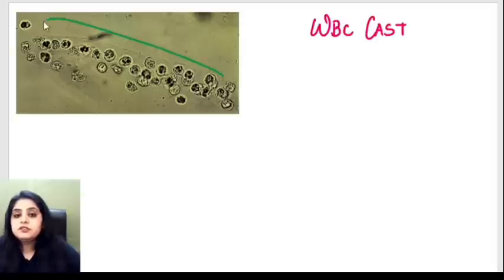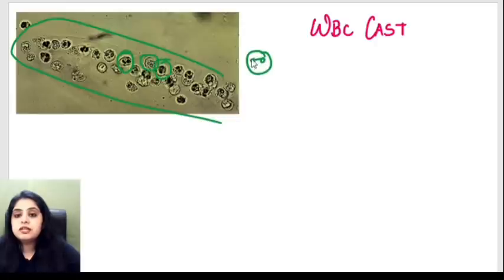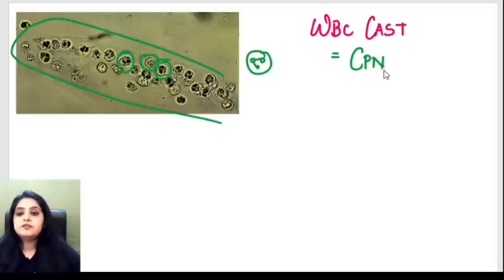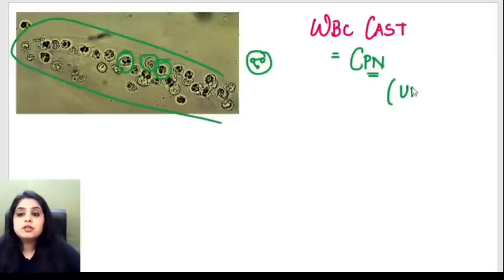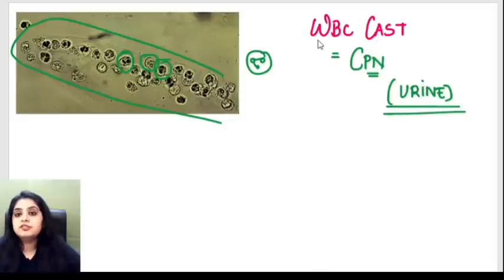Moving on, here I have the same cylindrical structure but now with cells that have nuclei on top — those are white blood cells. A WBC cast is seen in chronic pyelonephritis. If you remember yesterday we studied the thyroidization of the tubules and kidney scarring in chronic pyelonephritis. The urine examination in chronic pyelonephritis will show you a WBC cast.